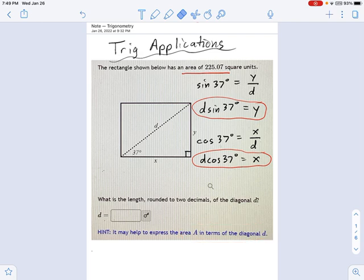Well, the area of a rectangle, if you remember, is pretty simple. It's just x times y. Or in other words, d sine of 37 degrees times d cosine of 37 degrees.